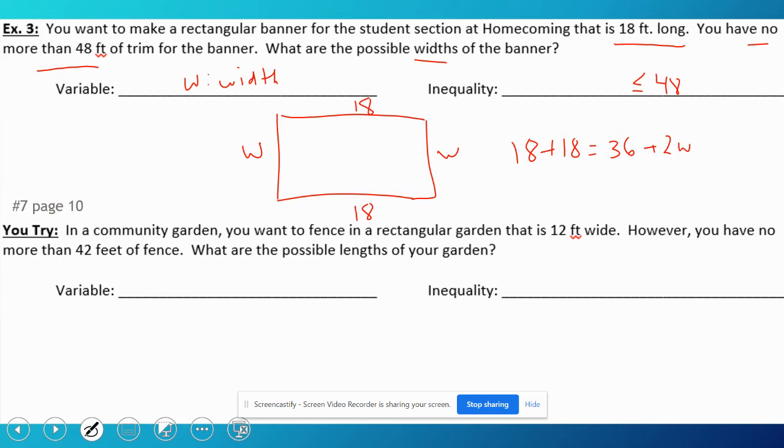Plus I have two widths, so 2w plus 36 is less than or equal to 48. Pretty easy to solve. Subtract 36. 2w less than or equal to 12. So the width would have to be less than or equal to 6. So what are the possible widths? Anything 6 or less.